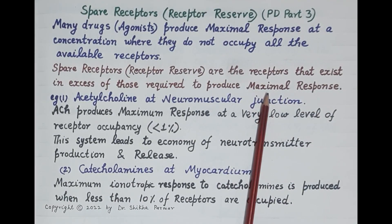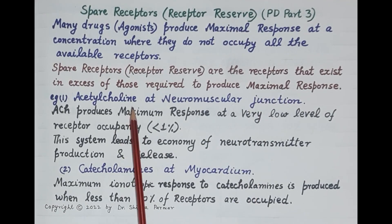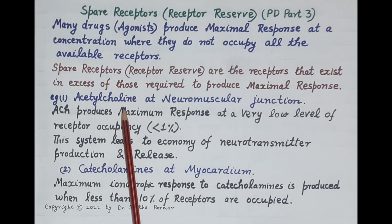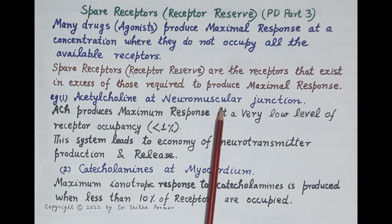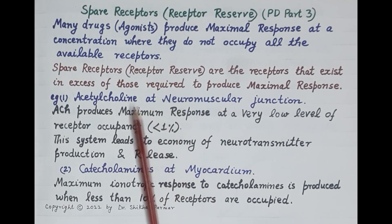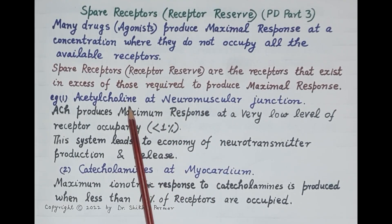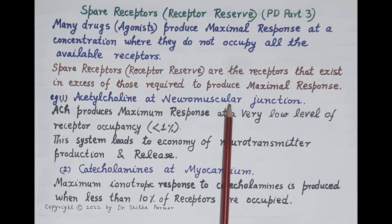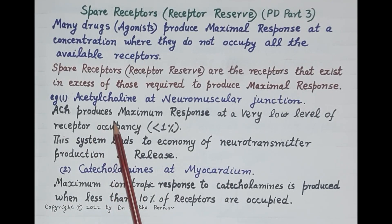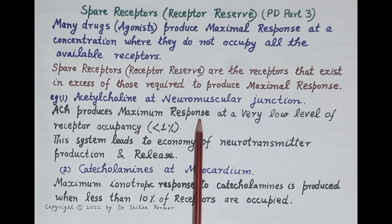Let's understand the concept of spare receptors with the help of examples. Our first example: acetylcholine is an agonist at the neuromuscular junction. Acetylcholine is a neurotransmitter produced in the body that binds to nicotinic NM receptors found on the neuromuscular junction and produces contraction of skeletal muscles.